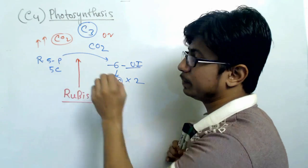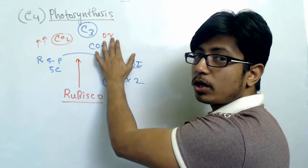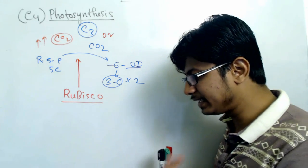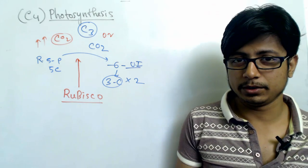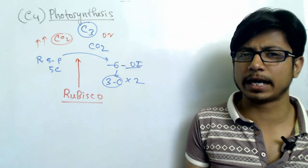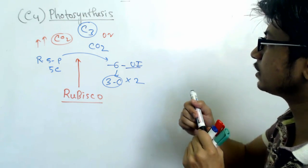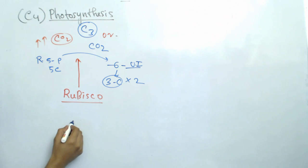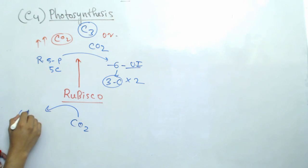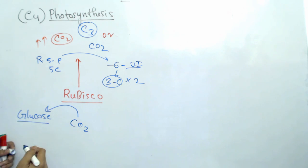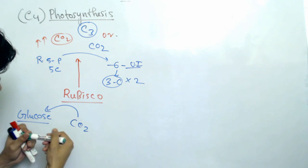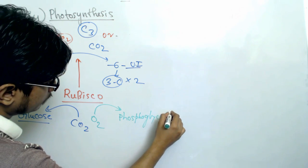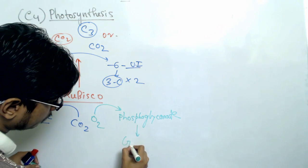But if RuBisCO interacts with oxygen instead, it will fix oxygen with the 5-carbon compound, and that will produce a completely separate component. Fixing carbon dioxide ultimately gives you glucose at the end through many intermediate stages, while fixing oxygen produces phosphoglycolate, and then phosphoglycolate is converted to glycolate.